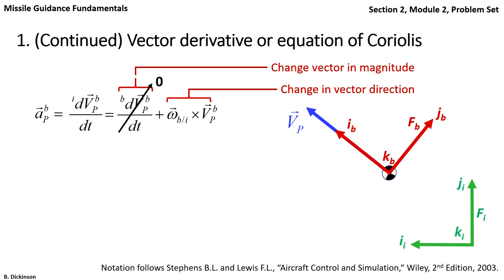But there is rotation in the body frame relative to the inertial frame due to the change in flight path angle. So we do have terms associated with the cross product. And this is what we now have to evaluate.